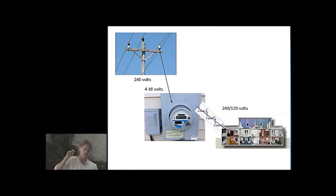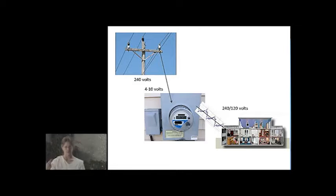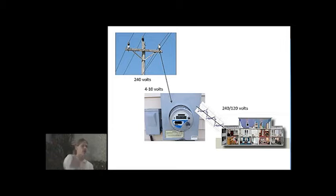Dirty electricity is also known by electrical engineers as noise on the line, power quality issues, voltage transients, and harmonics. There's a variety of different names for it, but dirty electricity is a very good summary of what it is.